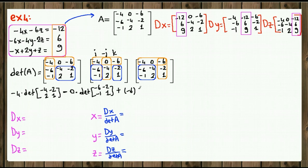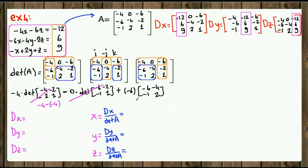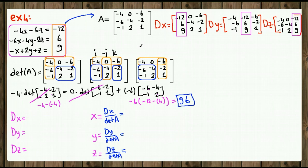The signs for row expansion go positive, negative, positive. The 0 times its determinant cancels out entirely. For the last term: the 2x2 determinant is negative 2 times negative 6 which is negative 12, minus negative 1 times negative 4 which is positive 4. So negative 12 minus 4 is negative 16. Negative 16 times negative 6 equals positive 96. So the determinant of A is 96.